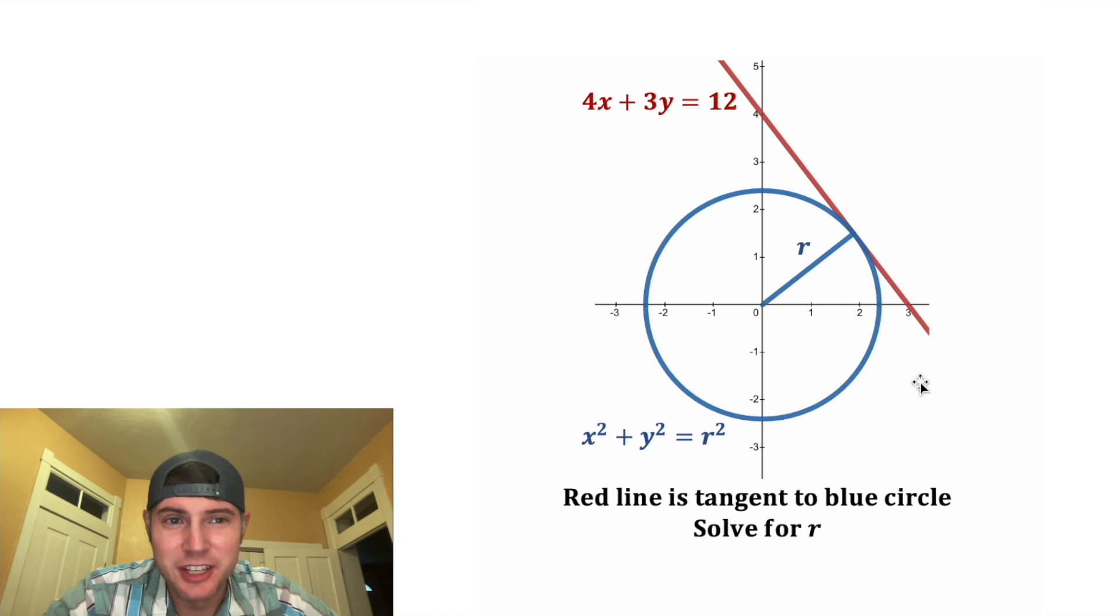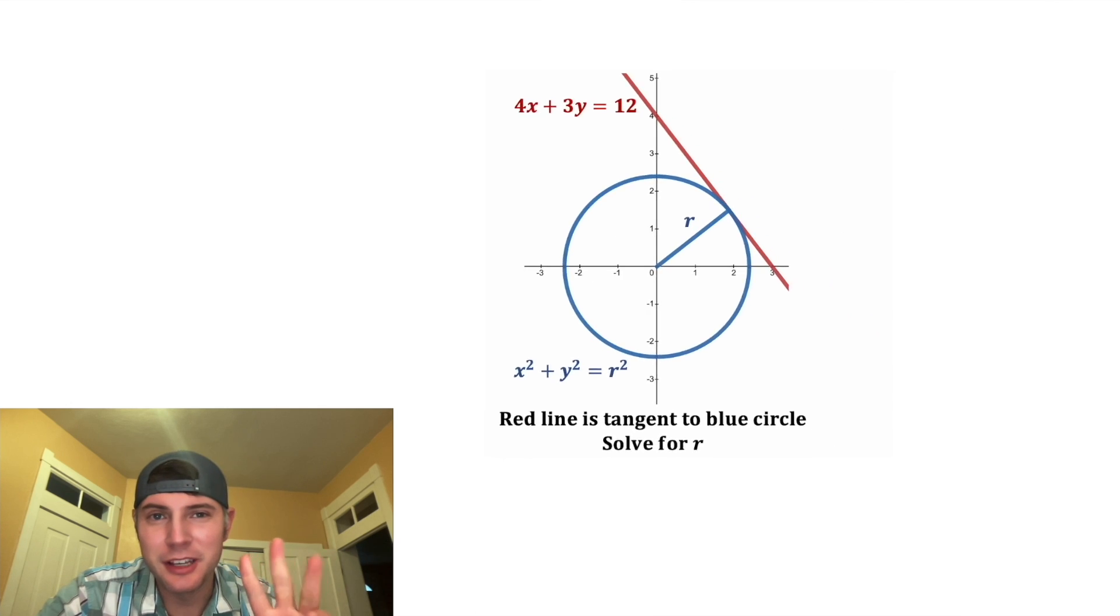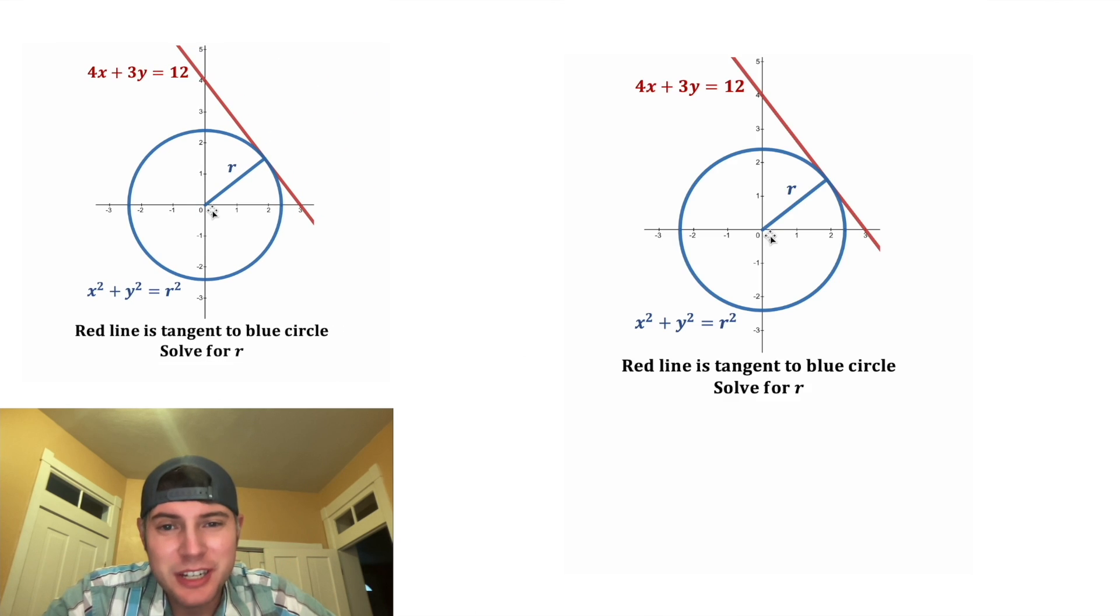I really like the solution to this one. If you want to try this on your own, pause it right now, because I'm going to solve it in 3, 2, 1. First important detail is a radius in a tangent line will always meet at right angles. So let's make this a right angle.